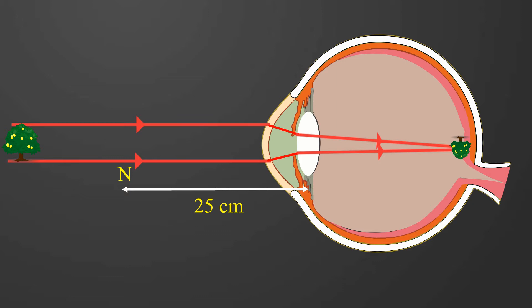The near point of these persons is M. N is the near point for a healthy person. For these persons, M is the near point. So when the object is at M, it forms a clear image on the retina. But when the object is at N, the actual near point, it cannot form an image on the retina.